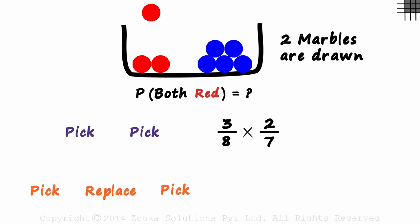Why did we multiply? Because there is an AND here. We pick and pick. Probability of A and B is equal to the probability of A multiplied by the probability of B given A has already happened. This is the probability of picking a red marble, and this is the probability of picking a red marble after having picked one.